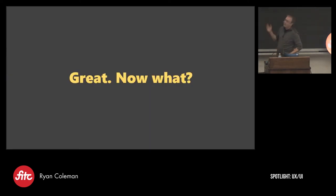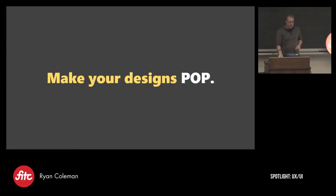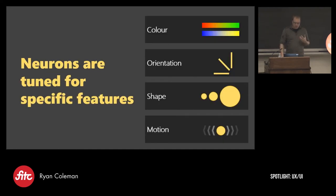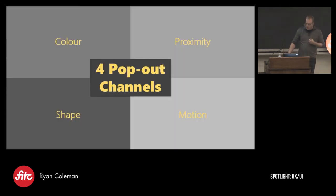So the question probably now is, great, now what? So the key really is to make your designs pop. And there's a concept that Colin Ware talks about in his book, Visual Thinking for Design, that's around that there are channels that let things pop. We talked about the neurons, how they're tuned for specific features. And they really translate pretty literally into these pop channels that you can use to let people detect things. There's four. So the four of them are color, proximity, shape, and motion.